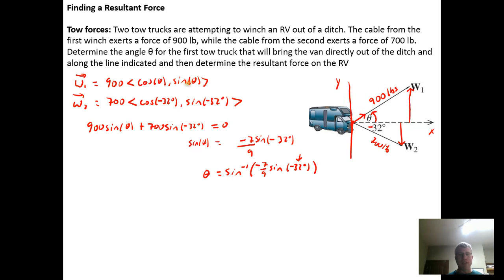I know now that I have the angle that it takes to get these two components of the force vector W sub 1 and W sub 2 to cancel out, which means the only force left is in the horizontal direction, which means I can find the resultant force on the system.